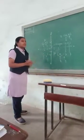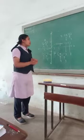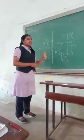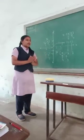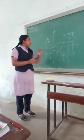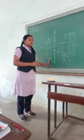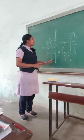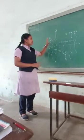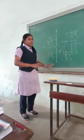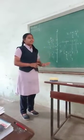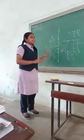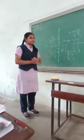Any point that lies on the X axis has a Y coordinate of 0. Any point that lies on the Y axis has an X coordinate of 0.